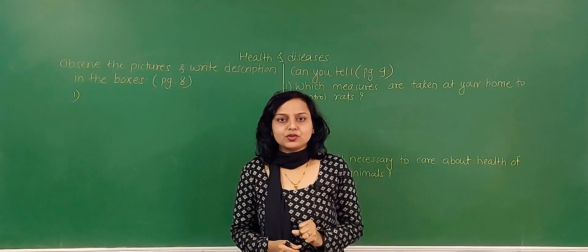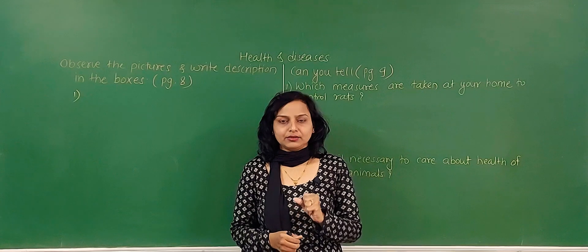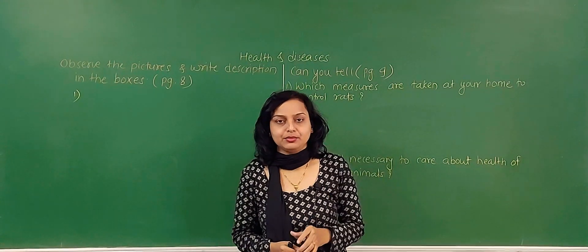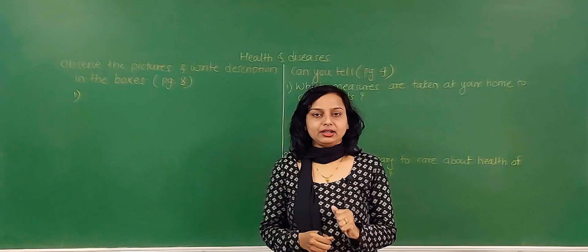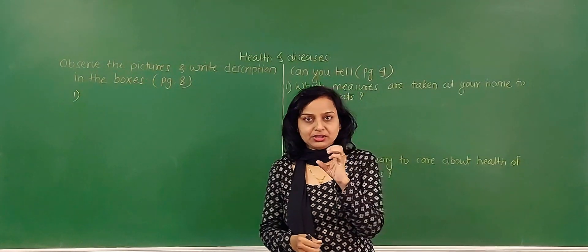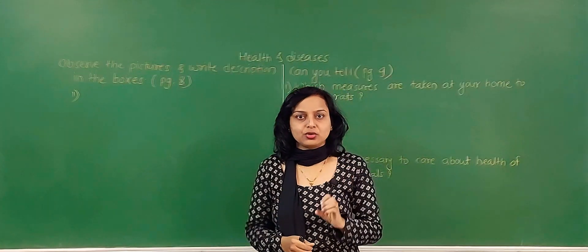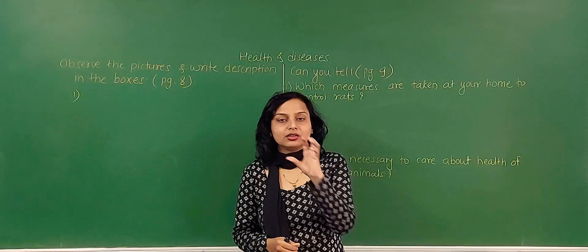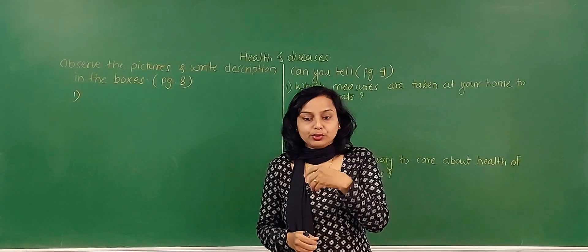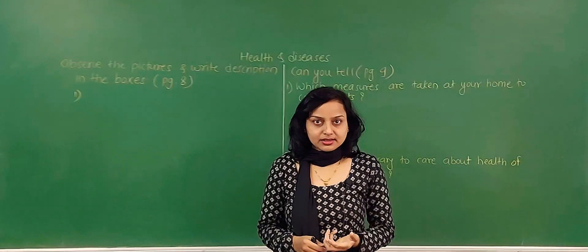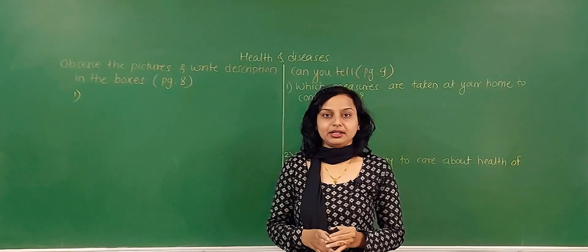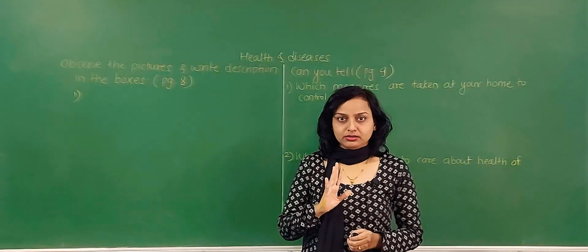The first question we are going to discuss is based on a diagram on textbook page number 8. We are going to discuss a diagram about the spread of disease — how many ways it spreads, how we can prevent it, and how we can address it. This is a diagram in the textbook.